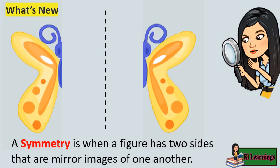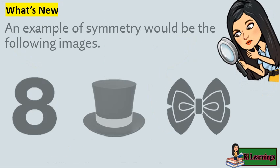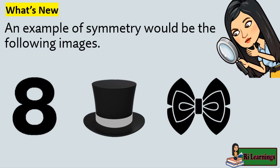A symmetry is when a figure has two sides that are mirror images of one another. An example of symmetry would be the following images. If we were to draw an imaginary line in the middle of it, we could divide it into two equal parts.